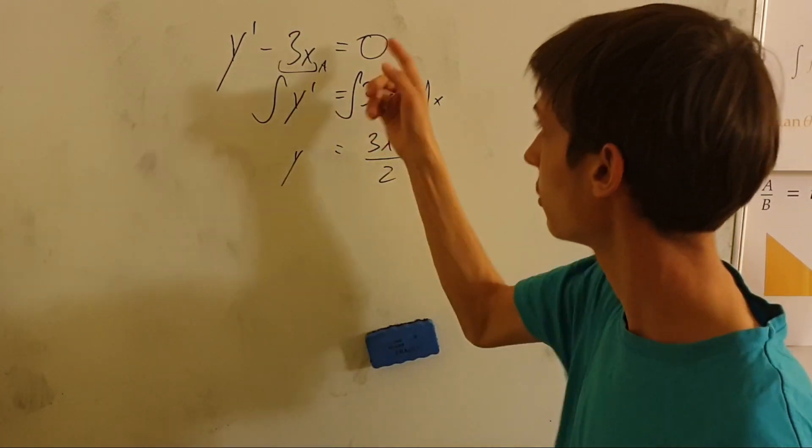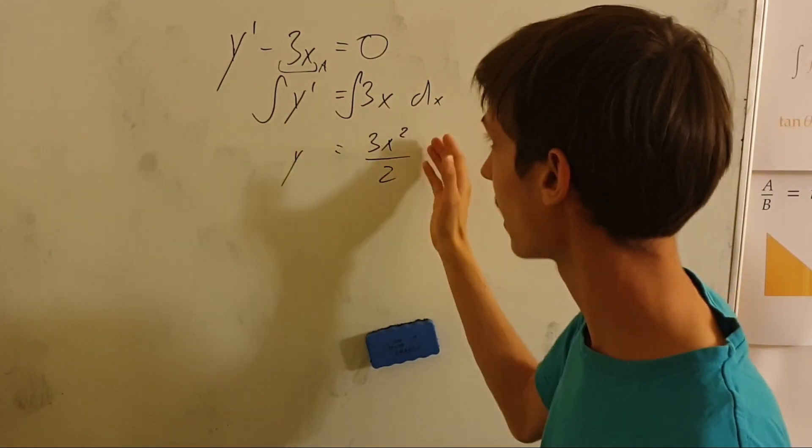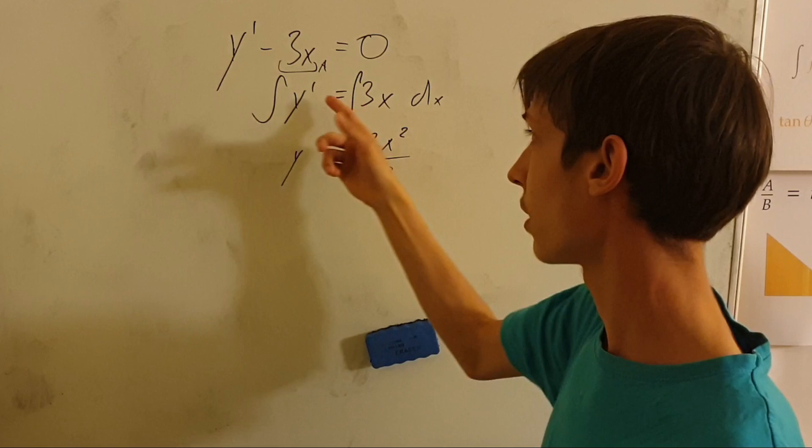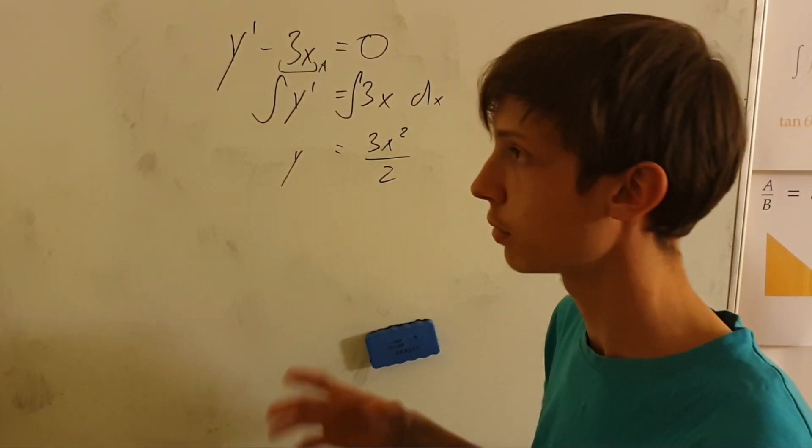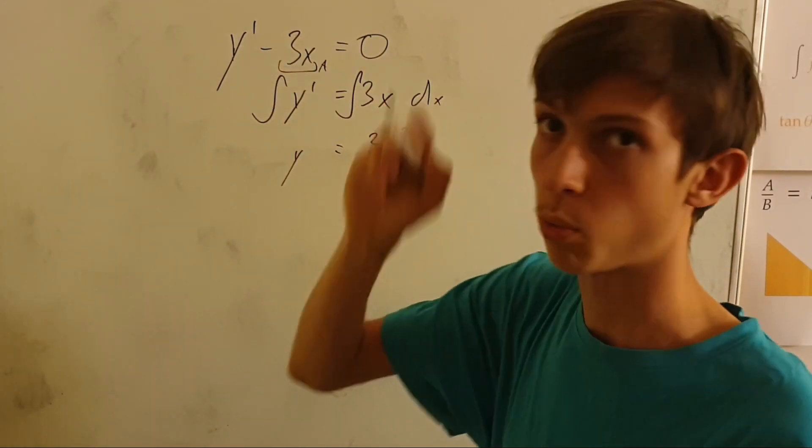We had y' minus 3x equal to zero. We took the 3x to the right side and we integrated both sides, got y out of y' because if you integrate a derivative you get the original function - no derivative, no integral, you get just y. So if we have y', you integrate y', you get y.